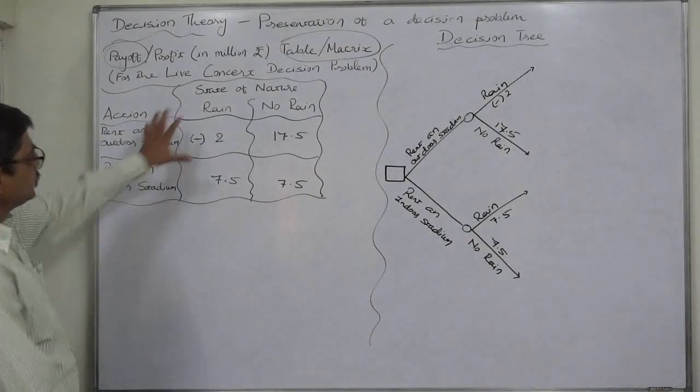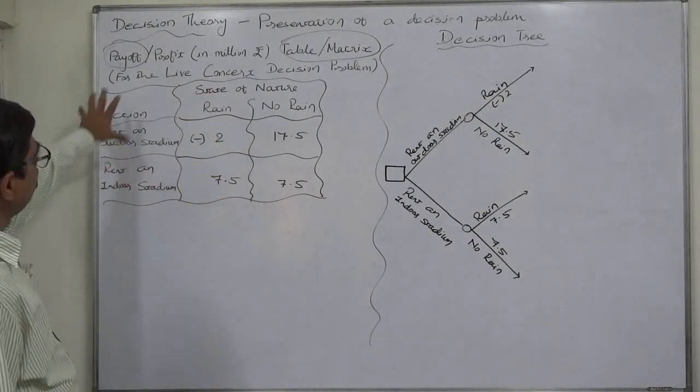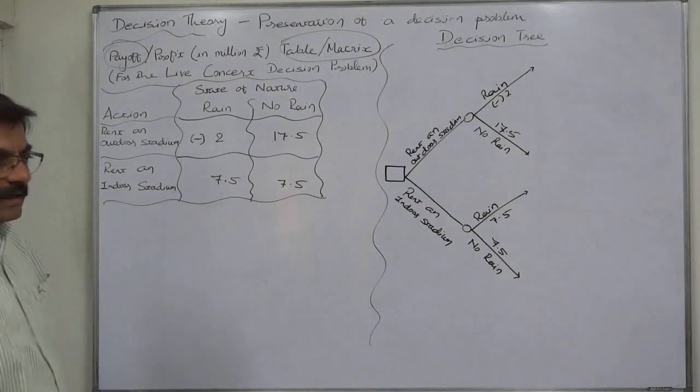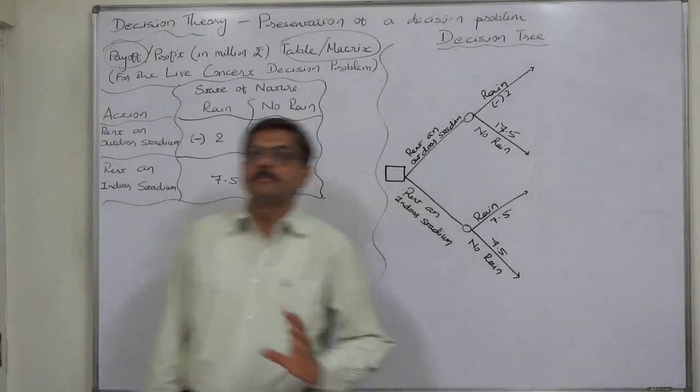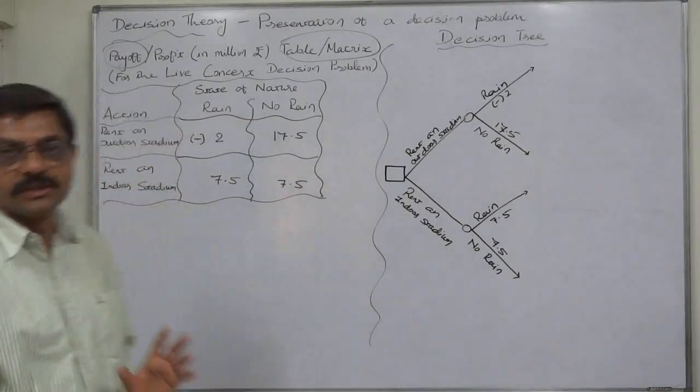This is a simple most payoff matrix or payoff table. It is a tabular summary of all elements of a decision problem.